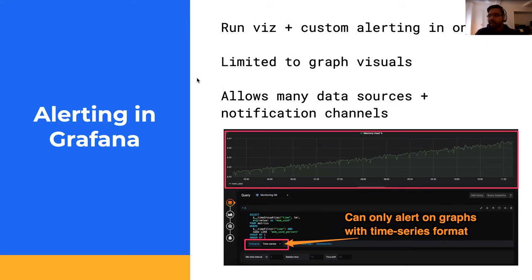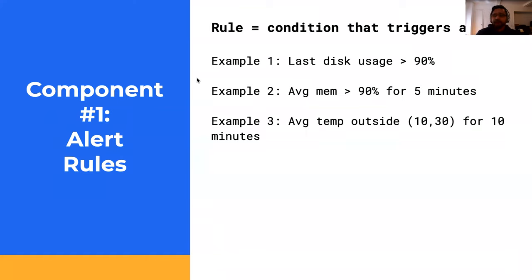There are two parts of alerting in Grafana you need to know about. The first is alert rules - these are probably the most important thing to understand. Alert rules are conditions that you define for when the alert gets triggered and when you want to be notified. Examples include: last disk usage is more than 90% - that's a threshold. You can also have alerts where a threshold is sustained - for example, average memory is greater than 90% for five consecutive minutes. You can also define ranges, like average temperature outside a certain range for 10 minutes.